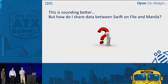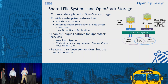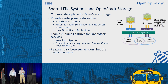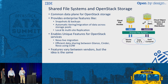How do we share data between Swift on File and Manila? That's where the shared file system comes into the picture. It provides a common data plane for OpenStack storage. Core features from vendors providing shared file systems include snapshots and backups, automatic tiering of data between different types of storage — so you can have some data in high-performance storage and other data in cheaper slower storage, automatically moving it between pools based on activity. Also, different kinds of replication including local site and multi-site replication.